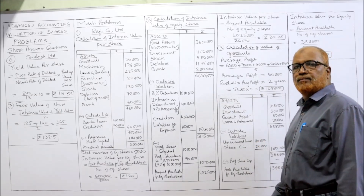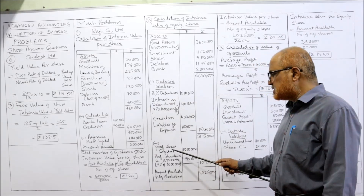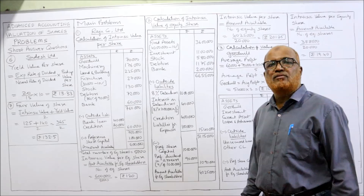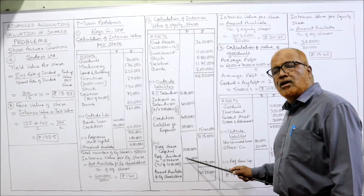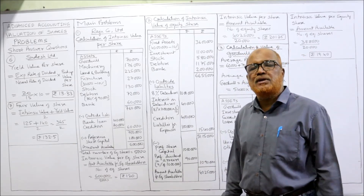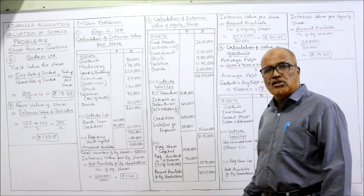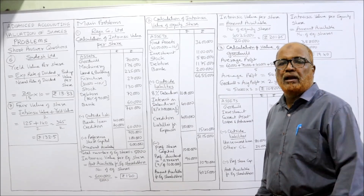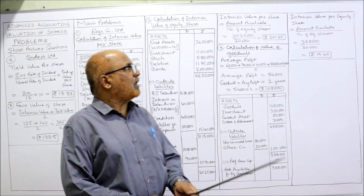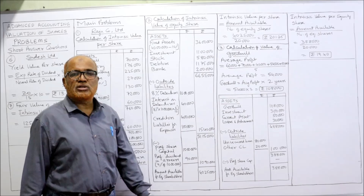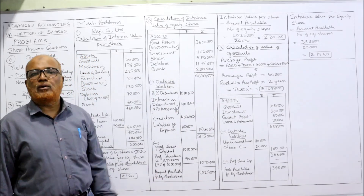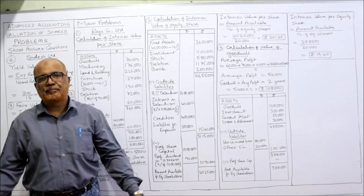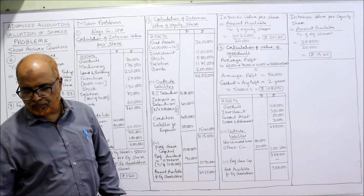Total outside liabilities ₹15,40,000. Deducting gives ₹51,15,000. Now subtract preference share capital ₹10 lakh. Preference dividend in arrear for 1 year: 9% of ₹10 lakh = ₹90,000 — that is also payable. So deduct ₹10,90,000 total. Amount available for equity shareholders = ₹40,25,000. Divided by 20,000 equity shares, the intrinsic value per share = ₹201.25. This is the end of problem number 2.